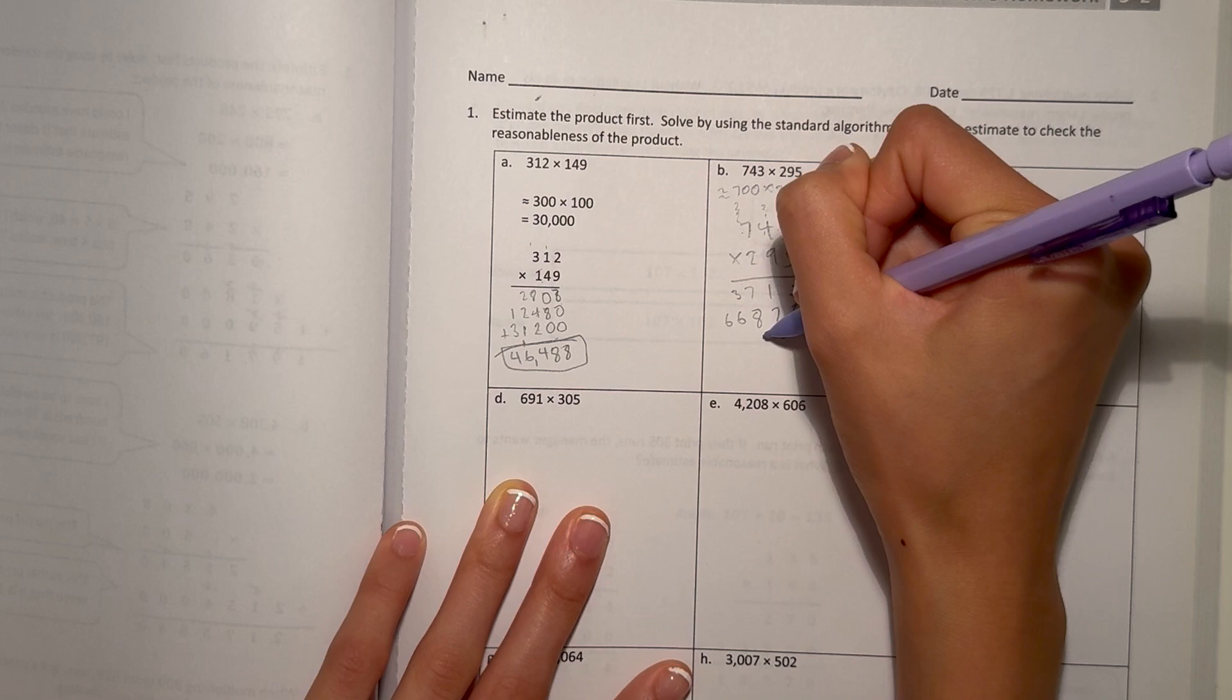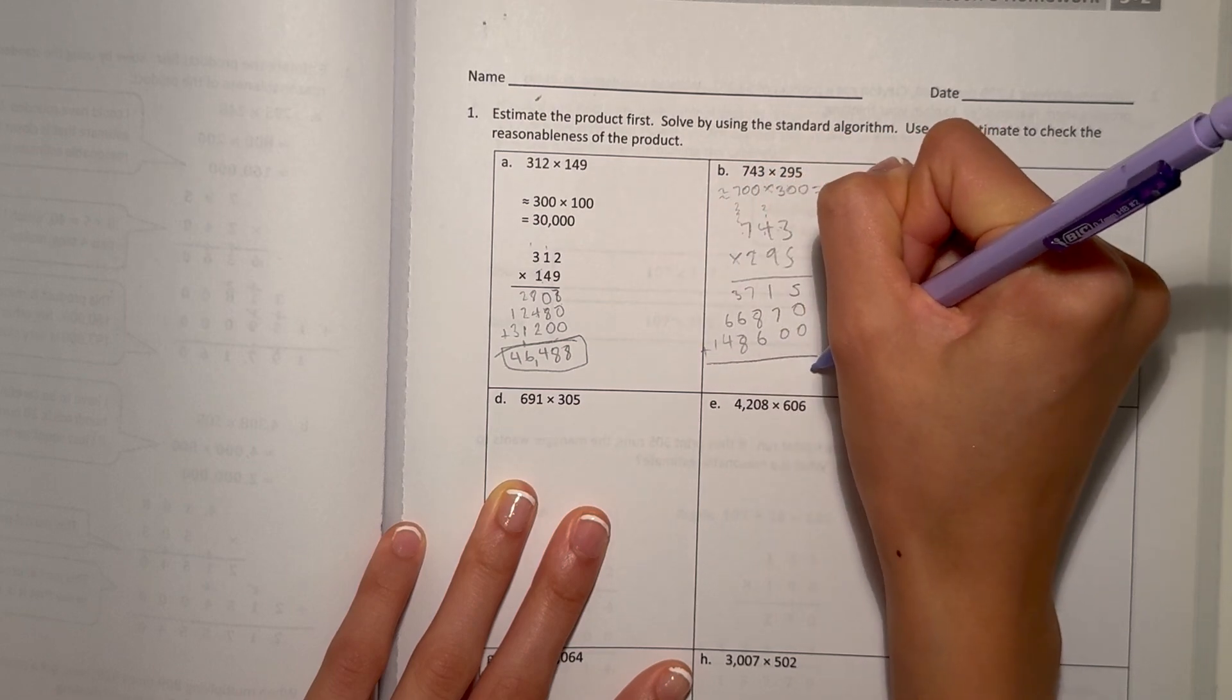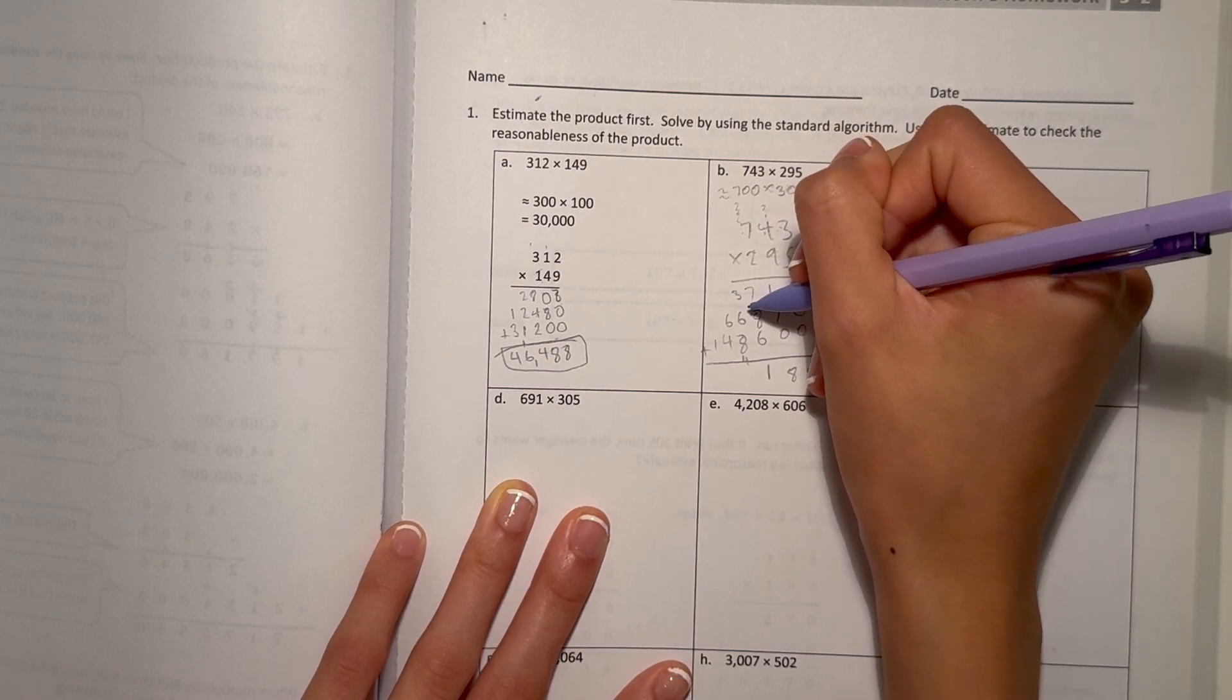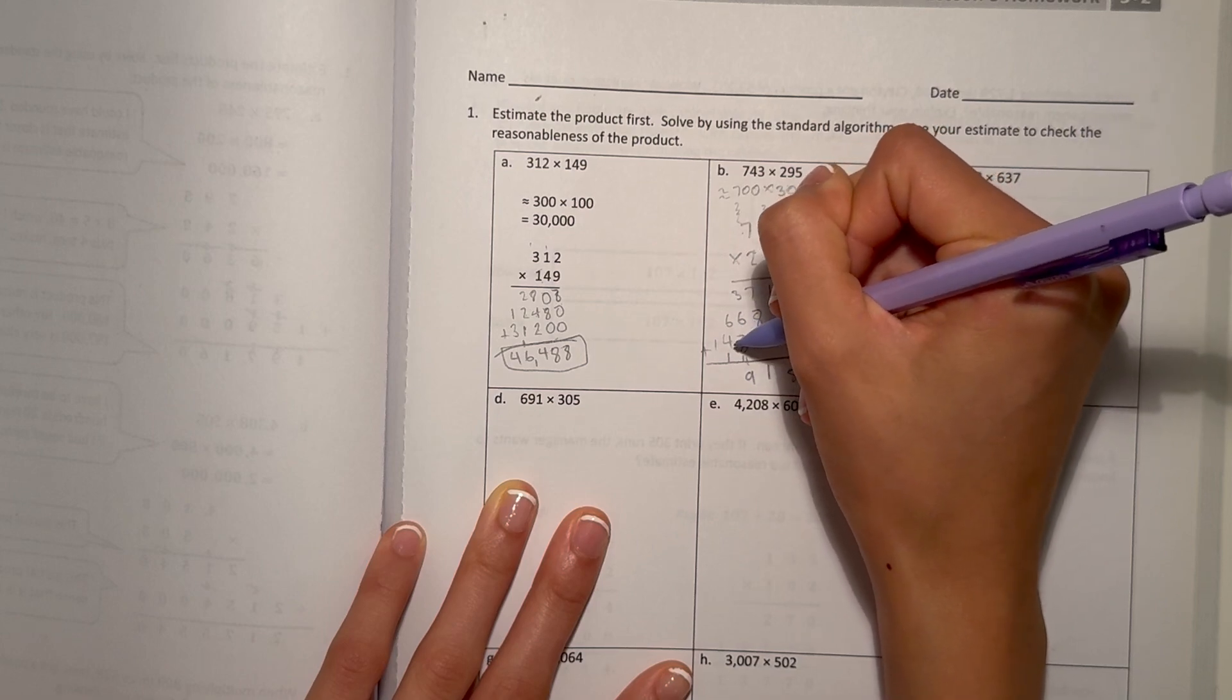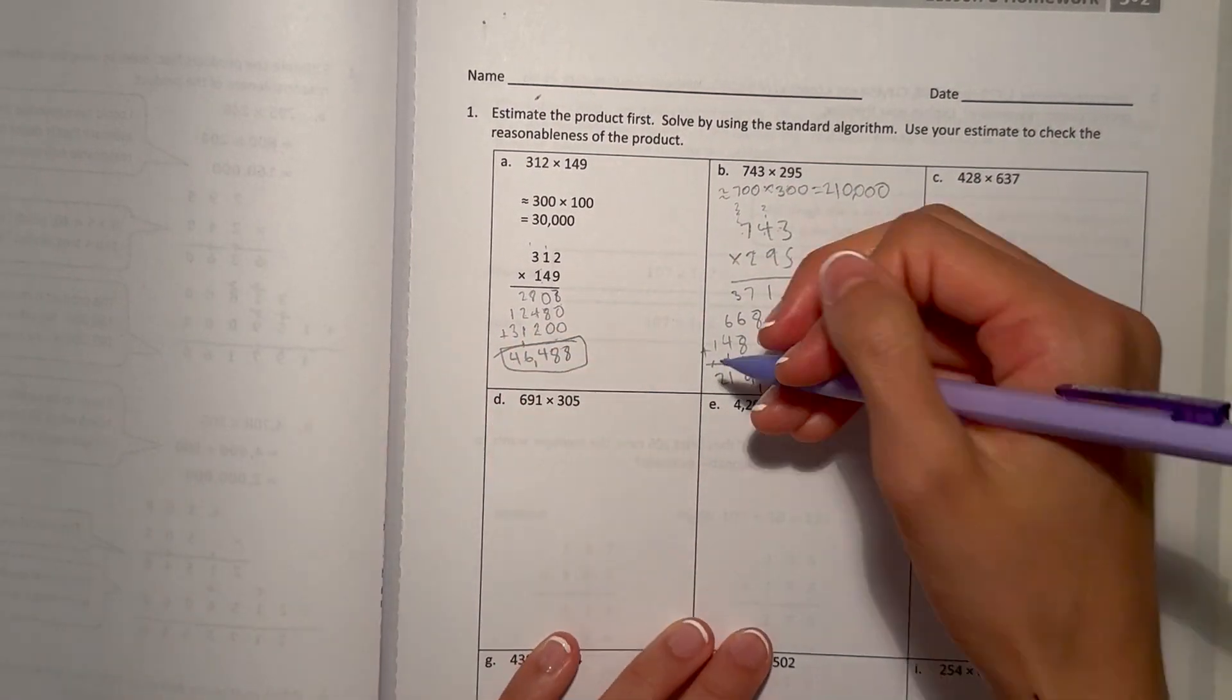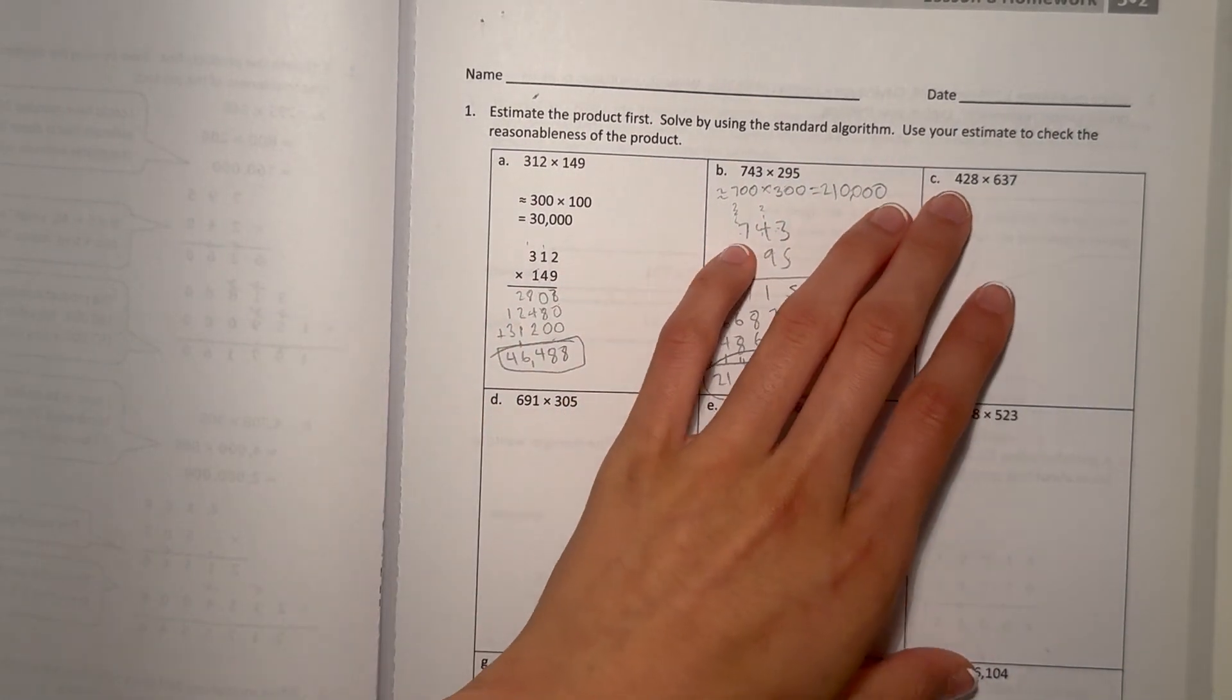Now 0 is 0. 2 times 3 is 6. 2 times 4 is 8. And 2 times 7 is 14. So now let's add. It's 21. 2 plus 6 is 9, plus 8 is 17, plus 2 is 19. And that is 11. So our answer is 219,185. And our answer is pretty reasonable because it's pretty close to 210,000.